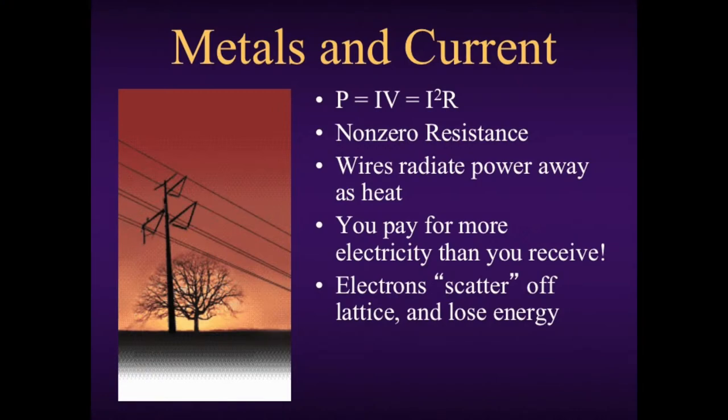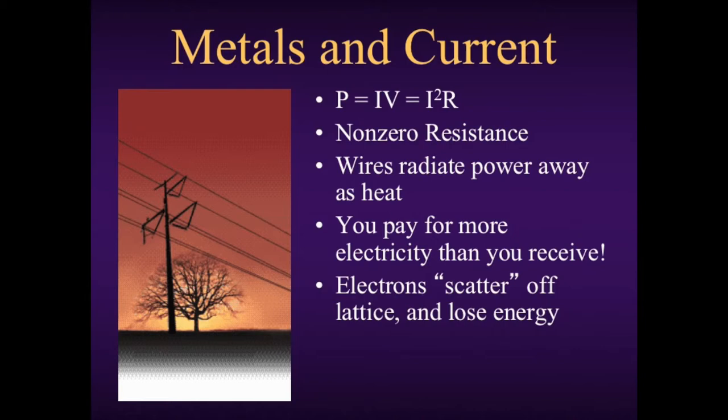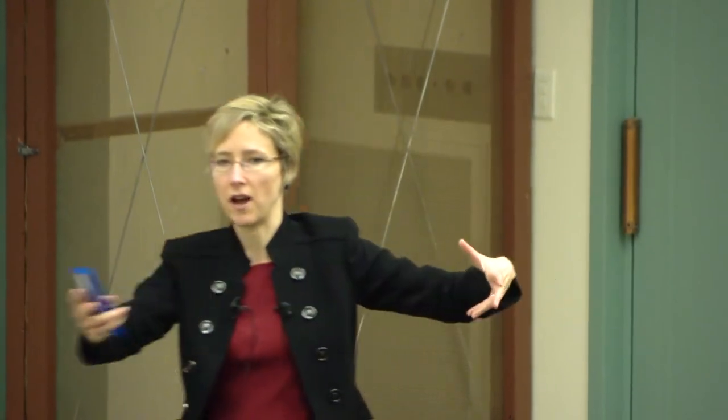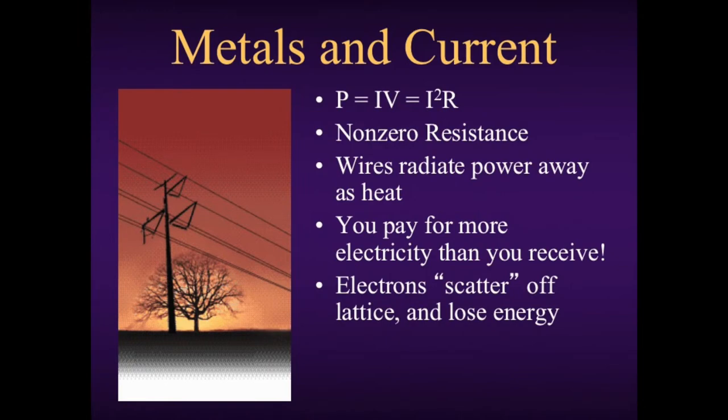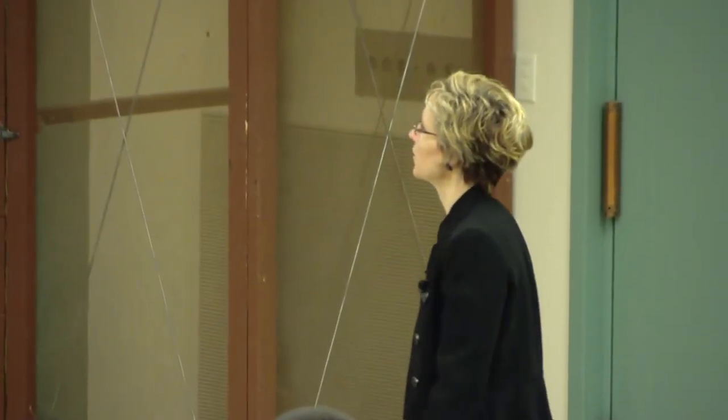All metals, even though they're really good conductors, are not perfect conductors. There is a little bit of resistance inside every metal, which leads to power dissipation. The power dissipated is IV, or I²R, where R is the resistance of the material. So when you have a non-zero resistance, that material always radiates away heat as it conducts electricity. Think about our power grid — all along those transmission lines, power dissipation is dissipating at I²R. They're giving off a lot of heat and just losing energy the whole time, so you pay for more electricity than you ever receive.